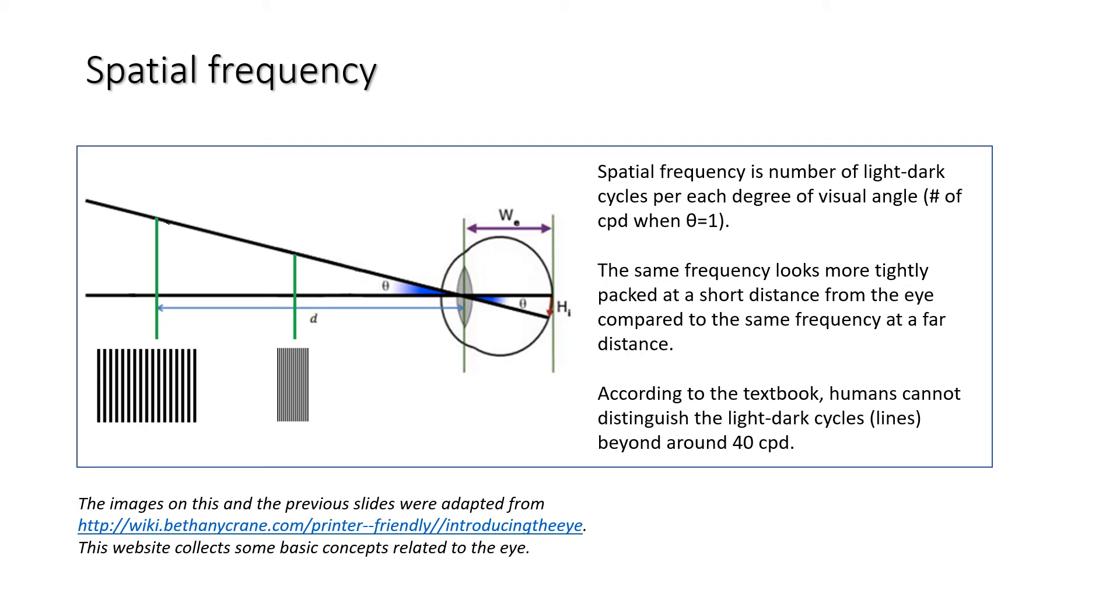One of the things we know, and you'll pick up on this if you've taken some physics and maybe even some anatomy courses, is that there are limits to the light wavelengths that the human eye can see. For example, we can't see radio waves or infrared light on our own, and as far as I know, only Superman has x-ray vision. But all joking aside, what we're looking at here is a concept from the text called spatial frequency.